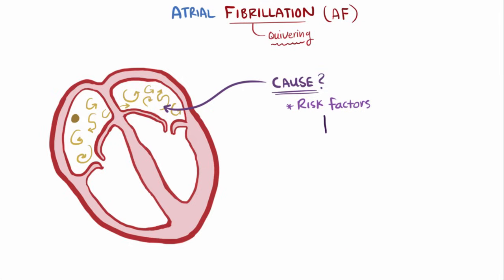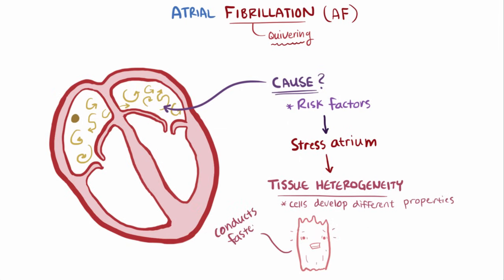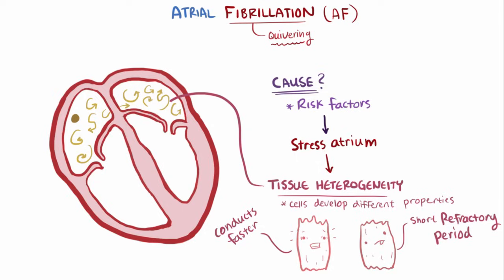These factors likely stress the cells in the atria, which can lead to tissue heterogeneity — meaning that the cells start taking on different electrical properties. For example, one cell might start conducting signals faster than its neighbor, and another cell might develop a shorter refractory period, which is the time following a depolarization that they can't conduct another signal. These different tissue properties can ultimately cause the conduction in the atria to become unpredictable.